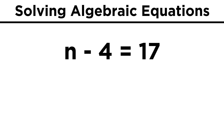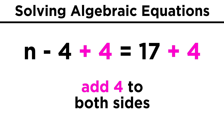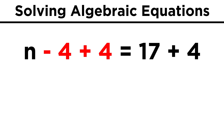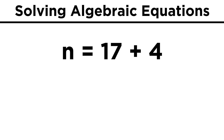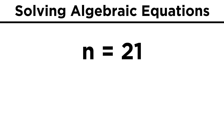If we had something like n minus four equals seventeen, we would add four to both sides, because addition is the inverse of subtraction. On the left, we get n by itself. On the right, we get twenty-one, so n is equal to twenty-one.